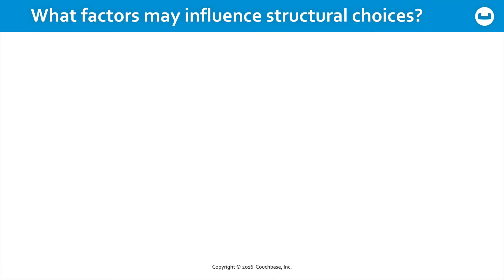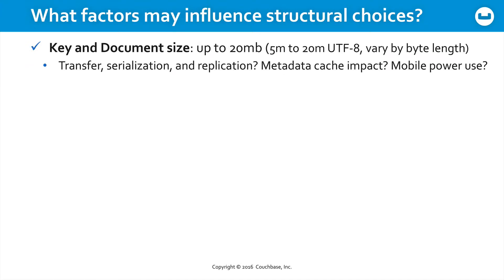So what factors influence your structural choices? First, you have to think about the size of your document ID and the document itself. The document can be up to 20 meg, but how large do you want it to be? What will the transfer time be of your documents? How long to serialize them in memory? How long to replicate them? Also, regarding your document IDs, as we've said, you need to think about the caching impact, because by default, document IDs are stored in metadata. What's the target environment? Are these documents going to be loaded into a mobile device? Or is this all happening on some very large server?